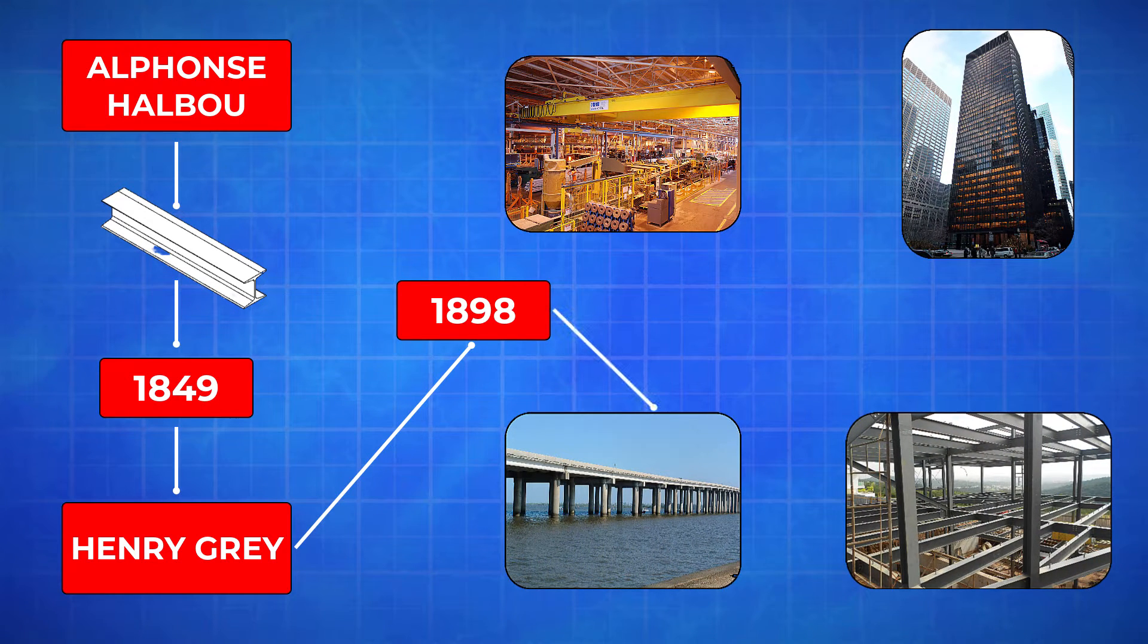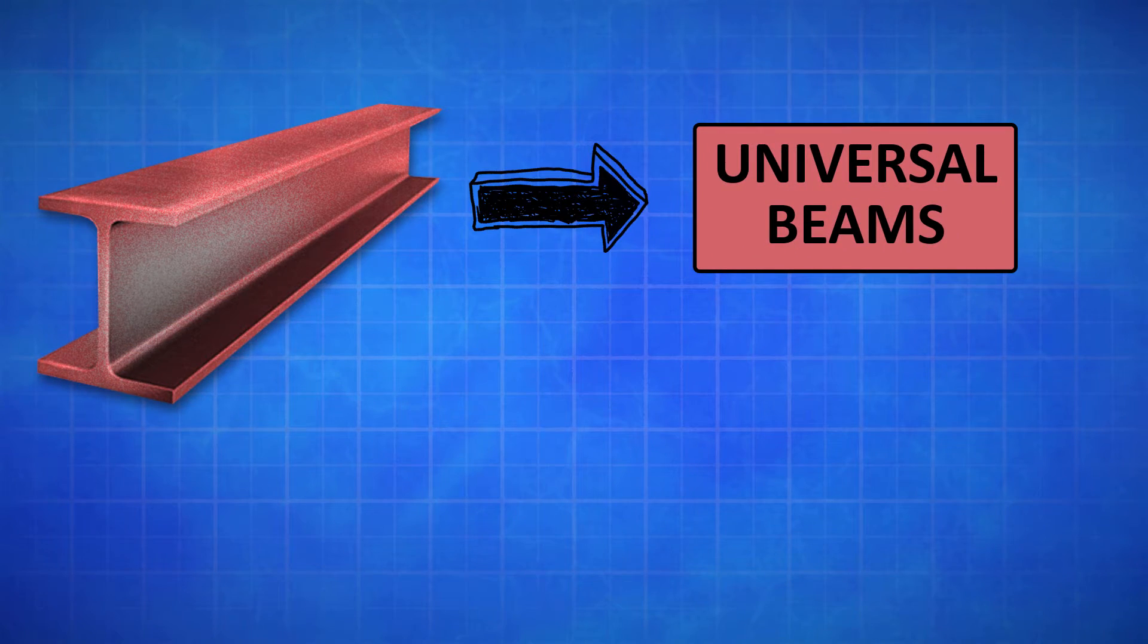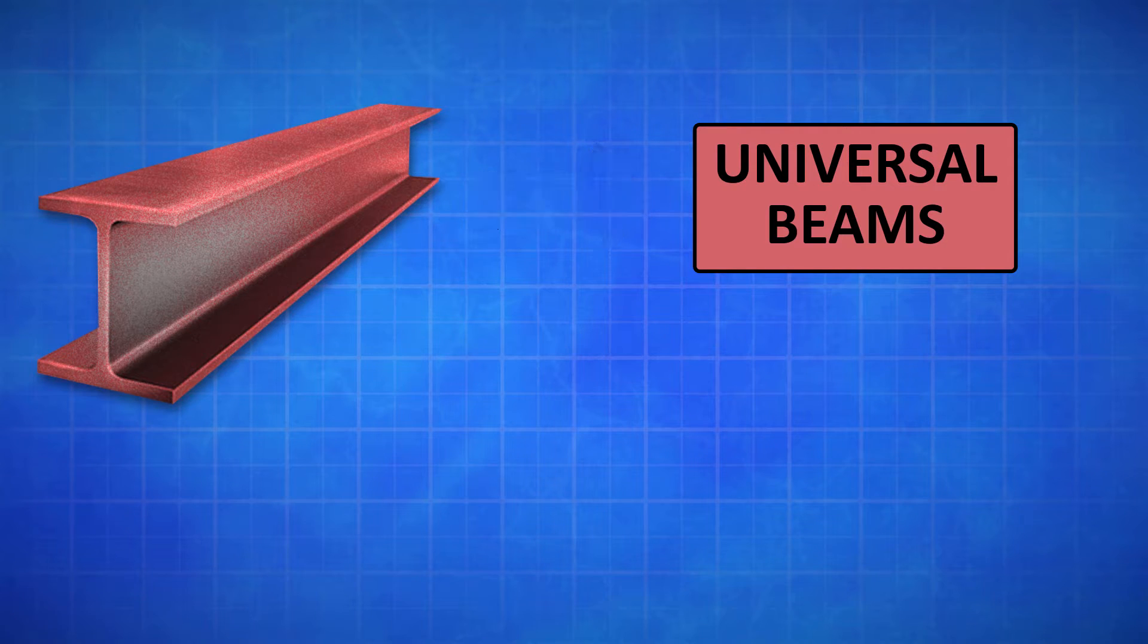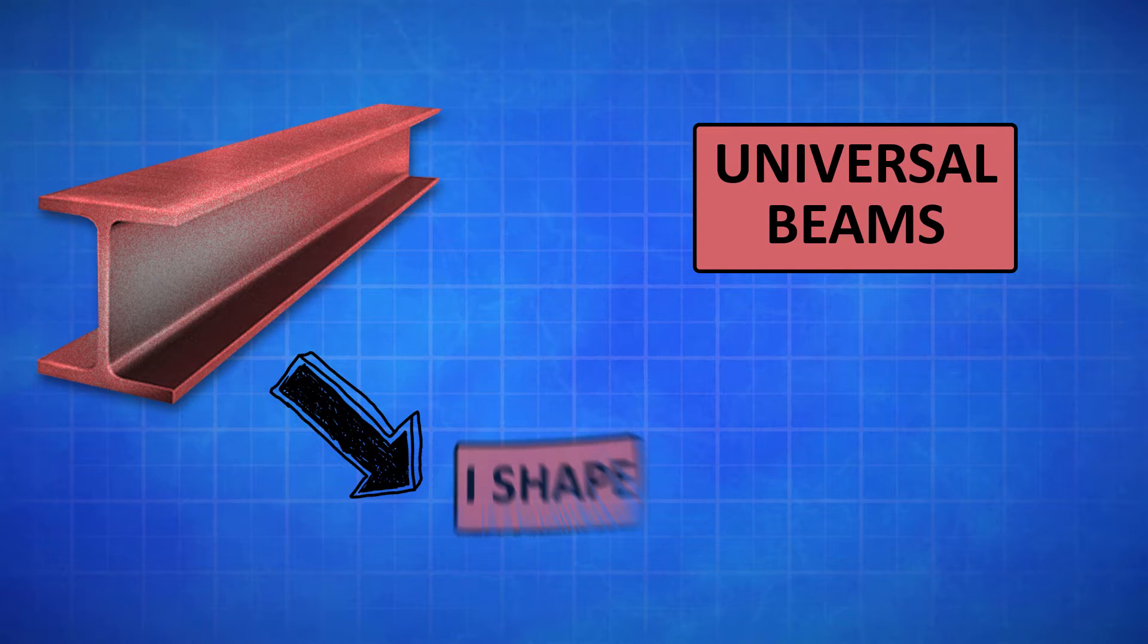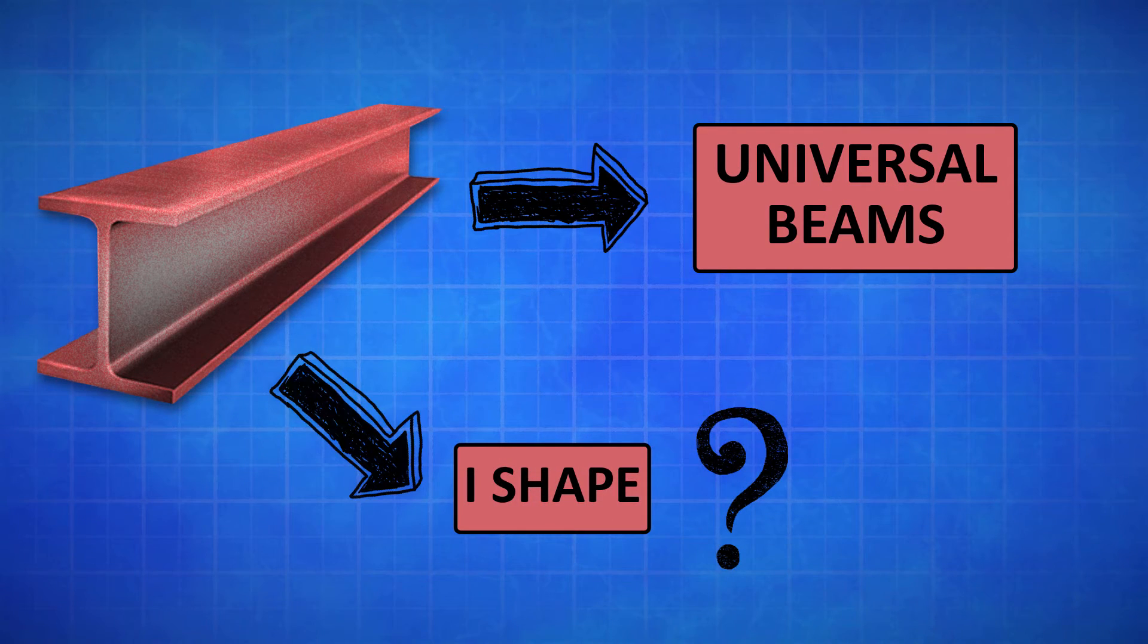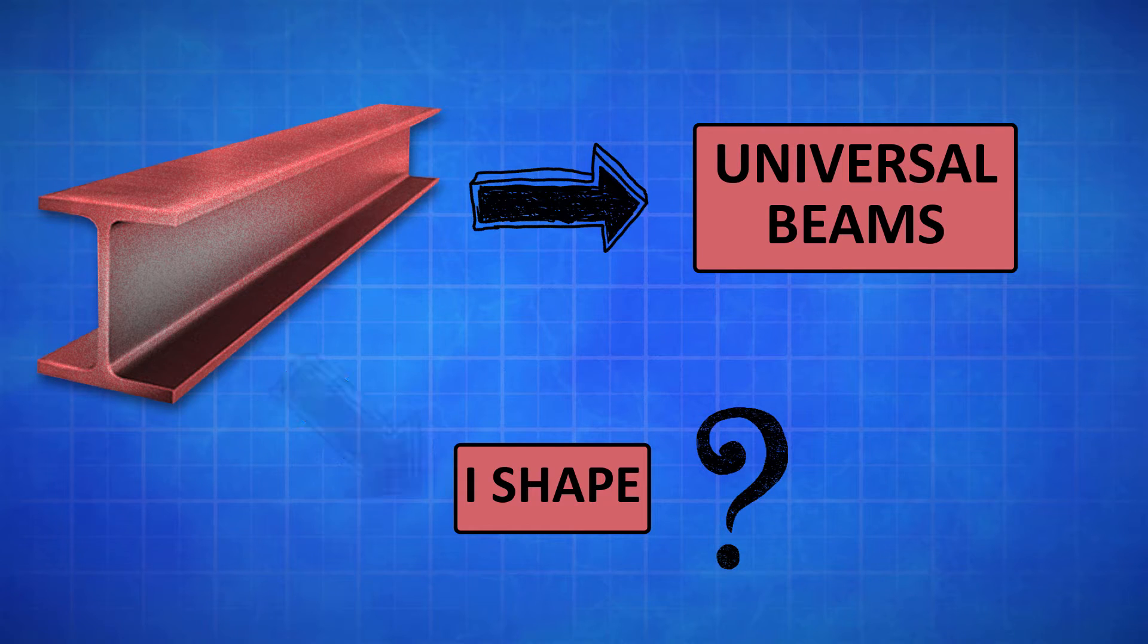Nowadays we see this beam in bridges, building frames, overhead cranes, and many more places. The I-Beam is also known as universal beams. But despite all these things, what is it in the I-Beam that sets it apart and earns significant value in the industry? Also, what does the shape have to do with the beam? Let's examine each of these factors one by one.